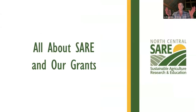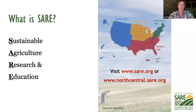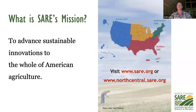First, what is SARE? We are the Sustainable Agriculture Research and Education group. You can see the four regions on the map - I think of it as the Midwest and the Plains. We're part of a national organization under the umbrella of the USDA, the U.S. Department of Agriculture. Our mission is to advance sustainable innovations to the whole of American agriculture, whether it's urban ag, large-scale row crop farming, wineries, or livestock production.